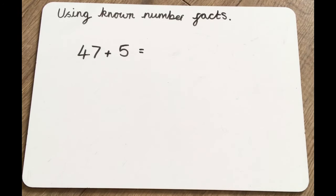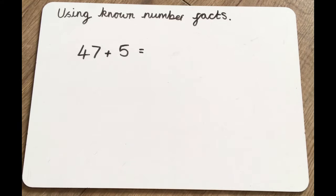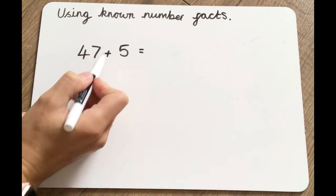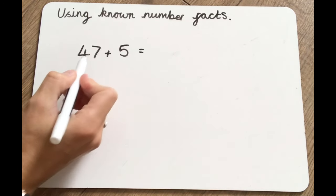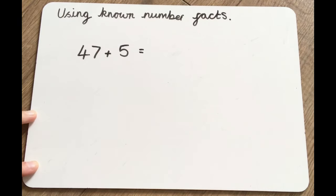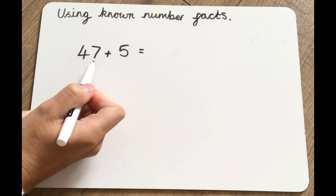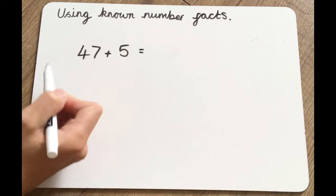This week as a mathematician, we're going to be using known number facts to solve addition equations. So here we've got an addition equation which is 47 add 5. We're going to use what we know already about numbers that make 10 to help us. So we're going to look at this number here and go to the next 10 first of all. The next 10 to this number is 50. So we look at the ones and think about how many we need to get to the next 10. We know 7 add 3 is 10, so 47 add 3 gets us up to 50.